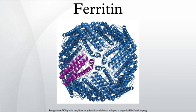Regarding ferroxidase activity, the heavy chain of ferritin also possesses ferroxidase activity, involving the conversion of iron from the ferrous to ferric form. This limits the deleterious reaction which occurs between ferrous iron and hydrogen peroxide — known as the Fenton reaction — which produces the highly damaging hydroxyl radical.